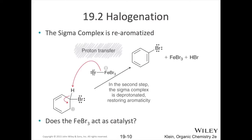To make the stable product, notice that the SP3 hybridized carbon can just have a proton transfer occur, and you basically restore aromaticity to the ring. This intermediate, while resonance-stabilized, is still an intermediate — not super stable. It'll go towards this more stable product relatively quickly and easily. You lose HBr as a byproduct. That extra bromine that was on your iron center picks up that proton and leaves as HBr. Notice that you restore your iron-3-bromide, so basically iron-3-bromide is a catalyst here.